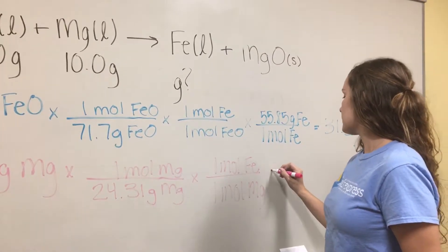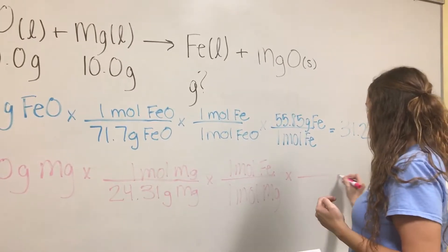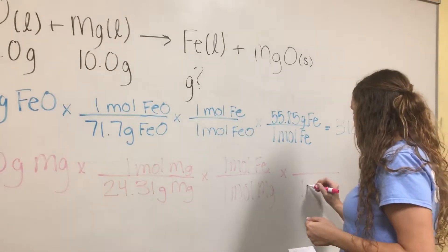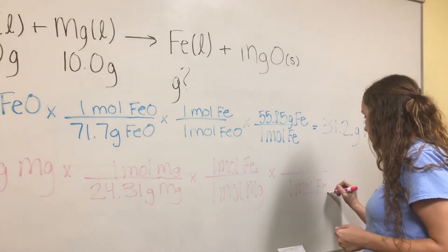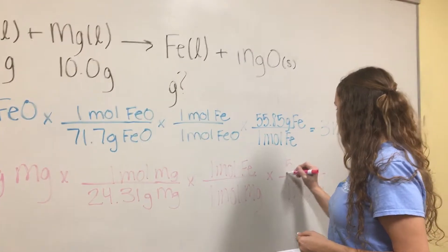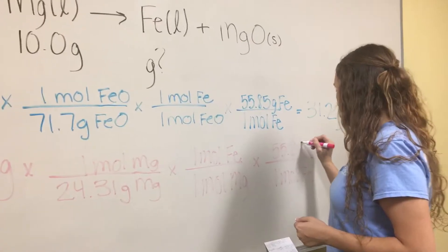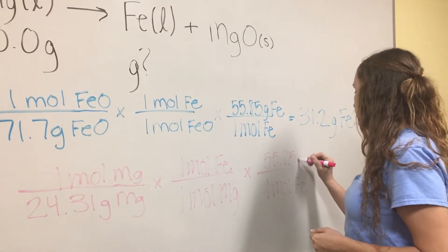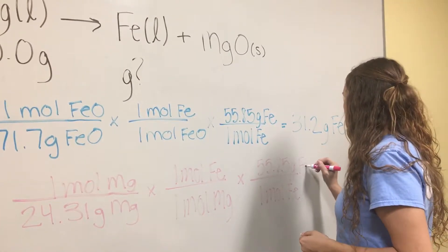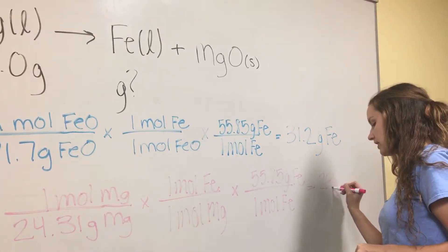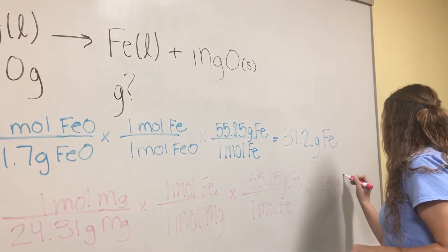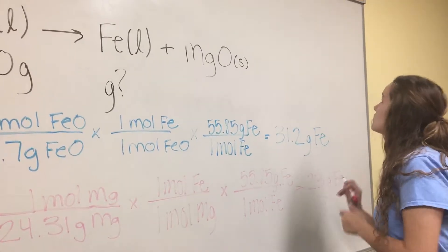And then, now we're going to find the molar mass of iron, which is 1 mole of iron equal to 55.85 grams of iron. After multiplying and dividing across, we get 23 grams of iron.